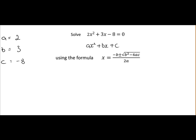So once a, b and c have been identified, we just sub them into the formula. That means x is going to be equal to minus b, so it's minus 3, plus or minus the square root of b squared, that's 3 squared, minus 4 times a, which is 2, times c, which is minus 8. And that's all over 2 times a, which is 2 times 2.